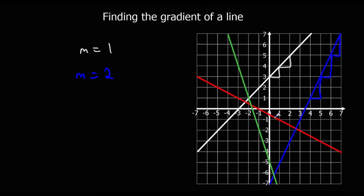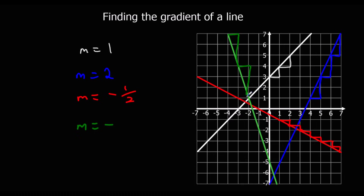Red: every 1 I go across, it's down half. 1 across, down half. So the gradient is minus half. And the green line — again it's going down, so it's going to be negative. Every 1 I go across, I go down 1, 2, 3. So the gradient is minus 3.